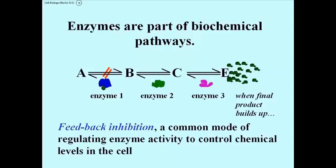That's called feedback inhibition, which is a very common way of regulating enzymes to control the levels of, in this case, E in a cell.